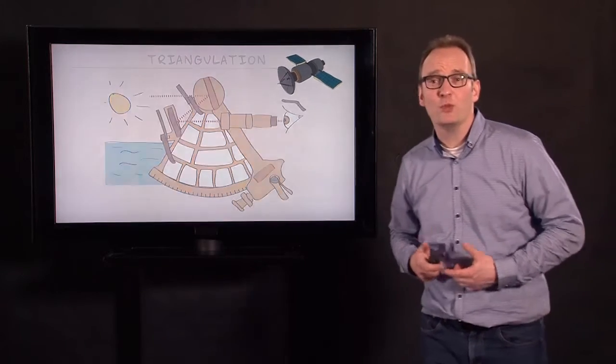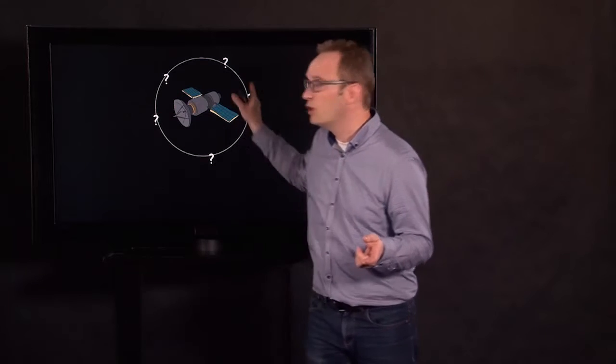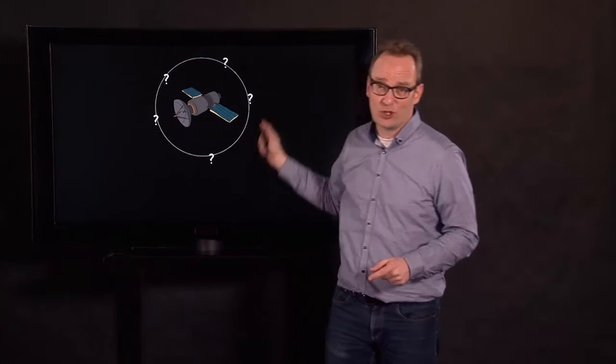To pinpoint your location, we nowadays use satellites. And how do we do that? Well, your mobile telephone or your GPS device measures the distance to a satellite. However, you don't know where at this circle you are. Somewhere, because you're at this distance, but you don't know whether you're here or there or somewhere else.